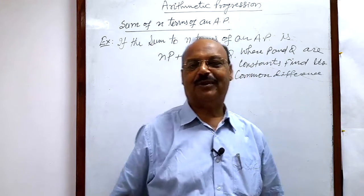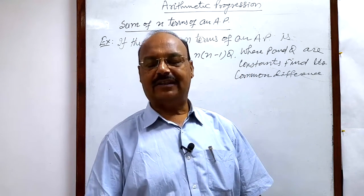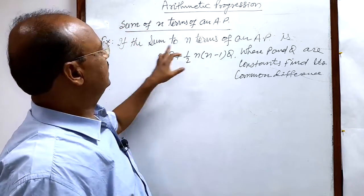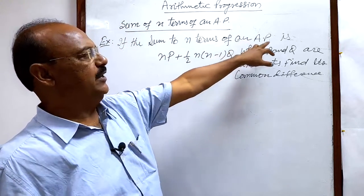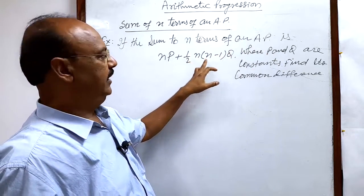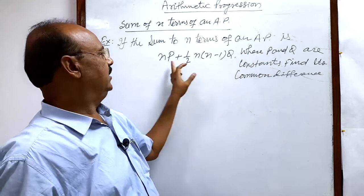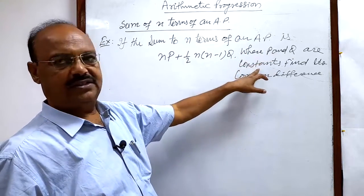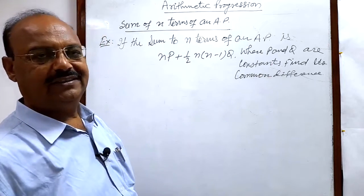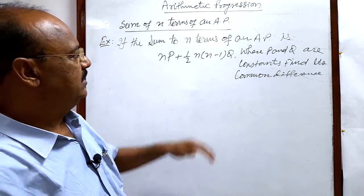Welcome students, let us see a question from the topic sum of n terms of an arithmetic progression. Here question is, if the sum to n terms of an arithmetic progression is np plus half of n(n minus 1) into q, where p and q are constants, find the common difference d. So what is given here?